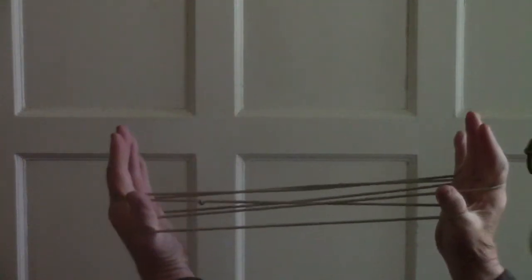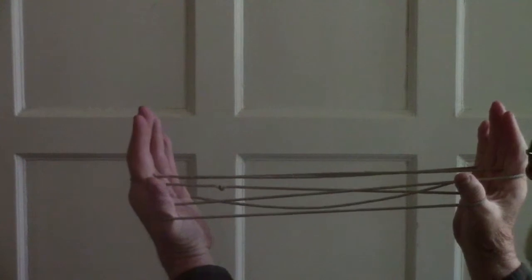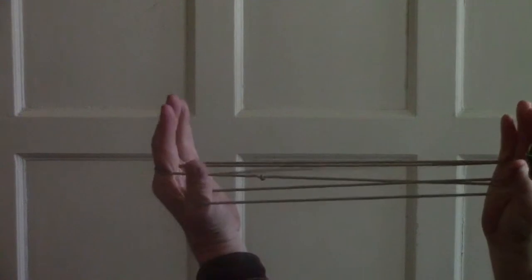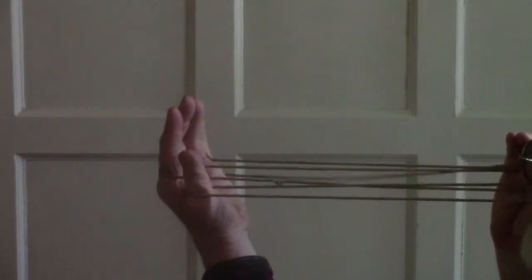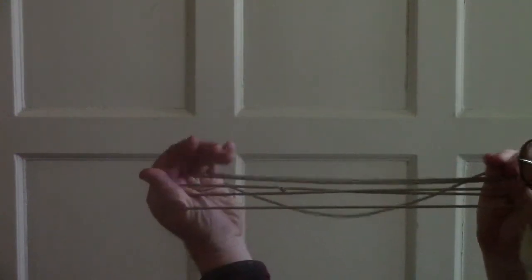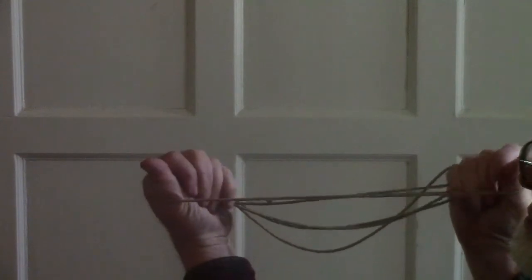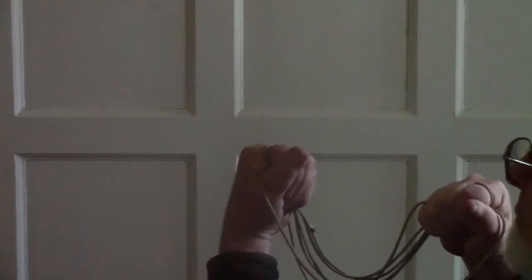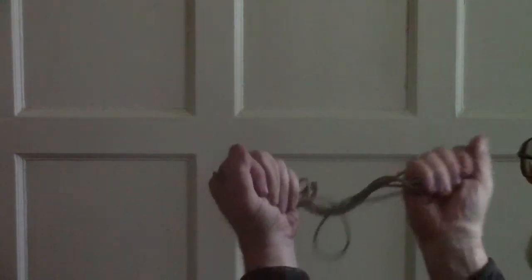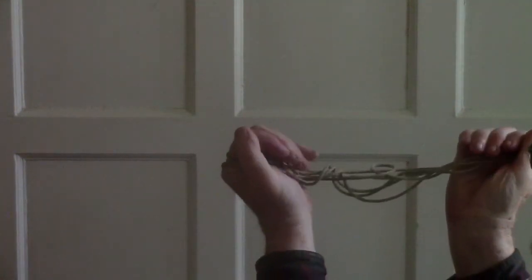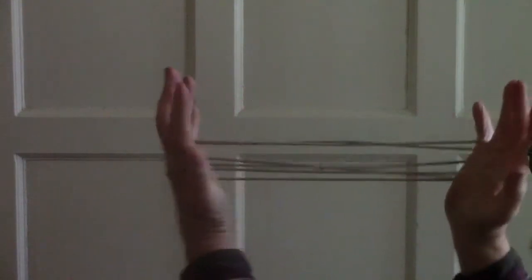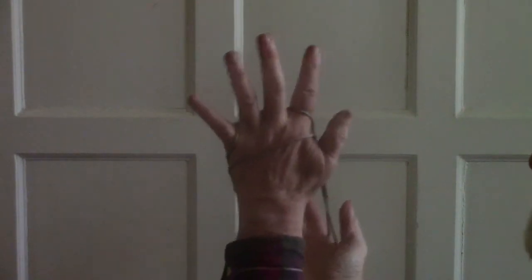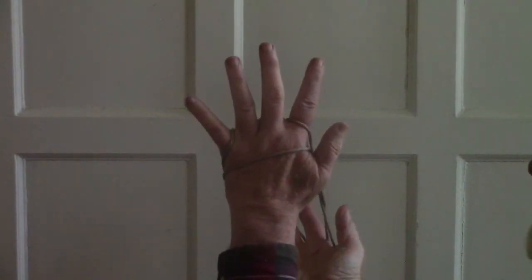So, first step. We take the four fingers excluding the thumb and clasp them down on all the strings except for the near thumb string. The near thumb string is now loose and we flip that over to the baby finger side. Pull the hands apart. We now have one string on the back of the hand.